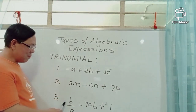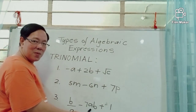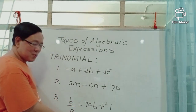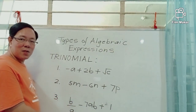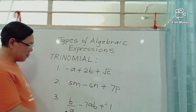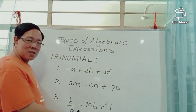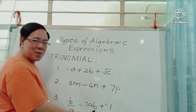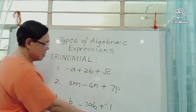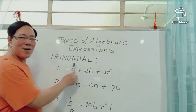A third example of a trinomial is b over a minus 7ab plus 1. This algebraic expression has three terms: the first term is b over a, the second is negative 7ab, and the last term, 1, is a constant term. This algebraic expression is called a trinomial.